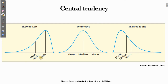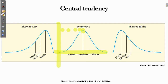Another important central tendency measure is the mode. The mode is the observation that appears the most inside your dataset. In the case of a symmetric distribution, the mode is equal to the mean and equal to the median. We can observe this because there is a peak — analyzing the vertical and horizontal axis, the mode is the observation that appears most frequently inside the dataset. These are the relationships between the central tendency measures.